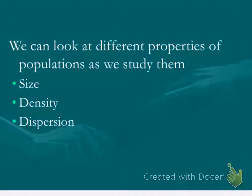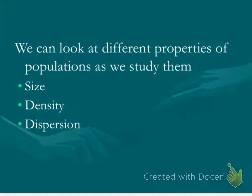Moving beyond what might sound like the intro notes to a doomsday speech — it's not — there are three big things that we're going to talk about with populations as we study their ecology, and those are size, density, and dispersion. Size is the easiest one to measure; it's not too hard to measure, and it's pretty easy to estimate also.